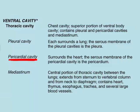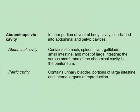Moving inferiorly into the abdominal pelvic cavity, we have an imaginary dividing line between the abdominal cavity — where the intestines, stomach, spleen, liver, and gallbladder are found — and the pelvic cavity, which only has enough of the intestines for excretions. So the rectum, which leads to the anus, is found in the pelvic cavity. Also in the pelvic cavity are the urinary bladder and the internal organs of reproduction in both males and females.